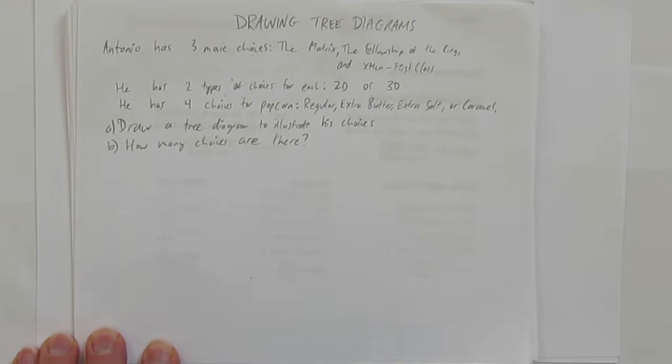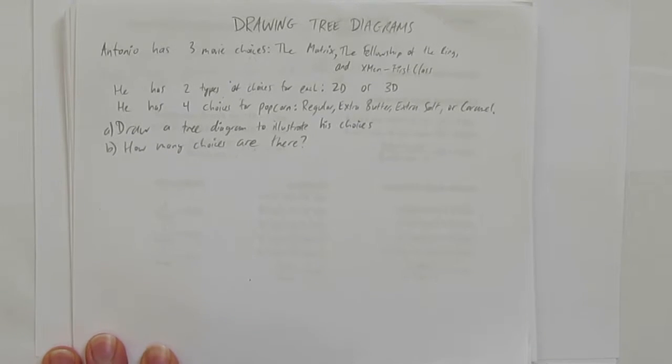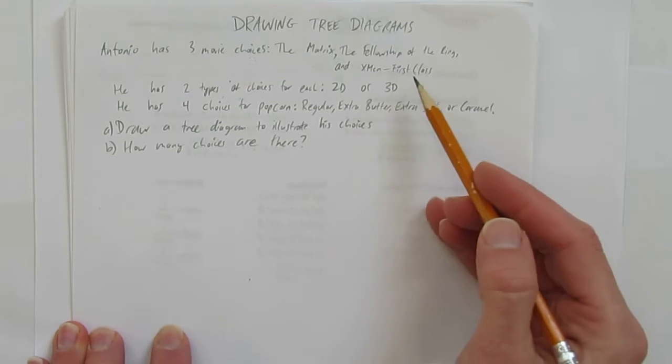In this video, we'll look at drawing tree diagrams. So suppose Antonio has three movie choices: one's The Matrix, one's The Fellowship of the Ring, and one is X-Men First Class.